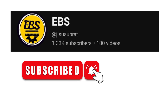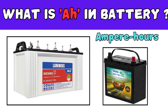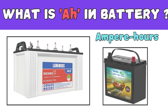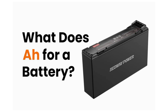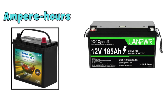Welcome back to another important video. Today we're going to see an important concept: what is AH in a battery? AH signifies that A is for Ampere and H is for Hours.